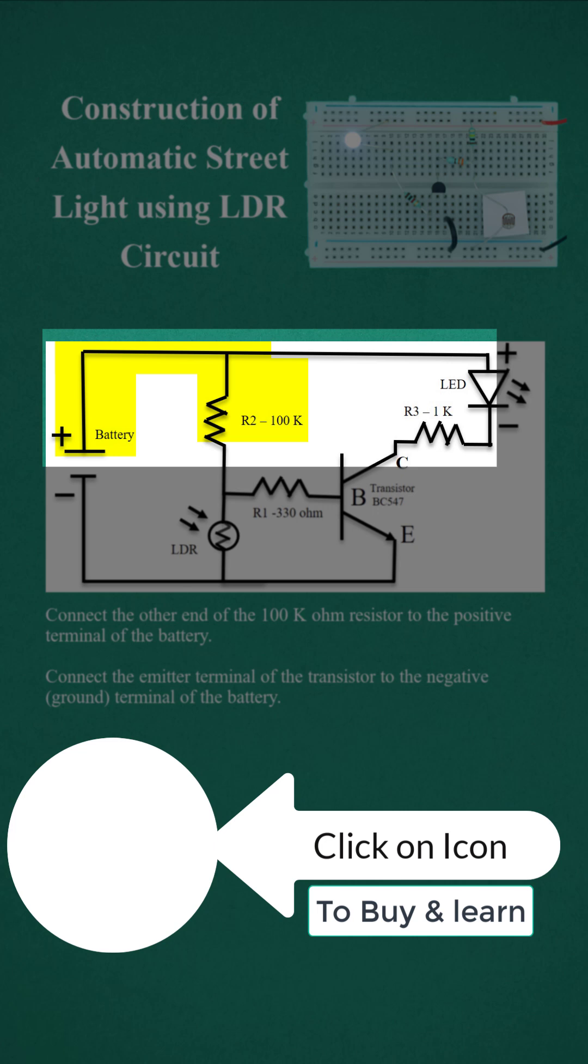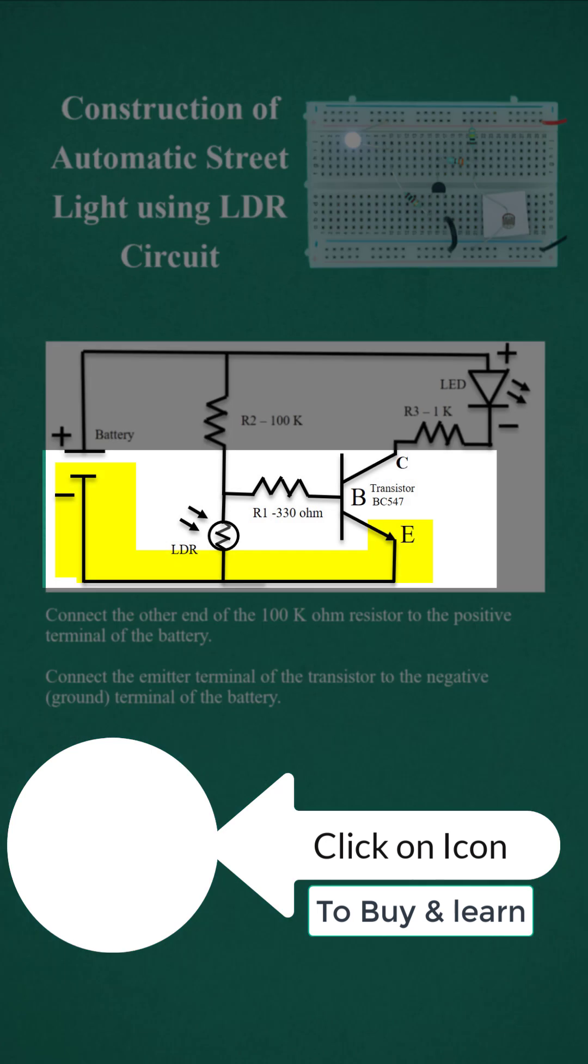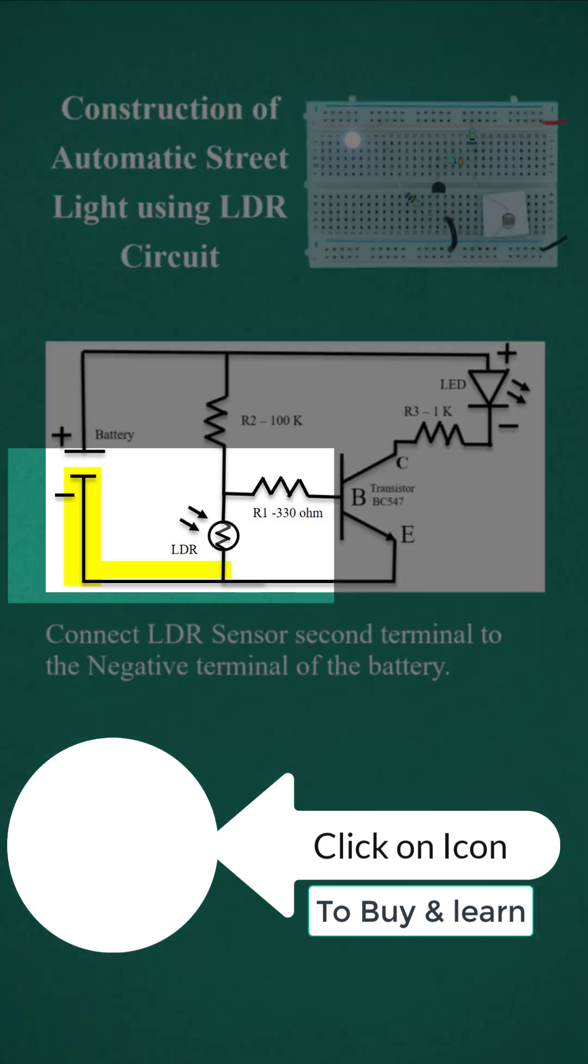Connect the other end of the 100 kilohm resistor to the positive terminal of the battery. Connect the emitter terminal of the transistor to the negative ground terminal of the battery. Connect the LDR sensor second terminal to the negative terminal of the battery.